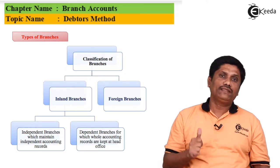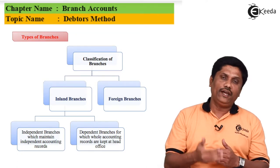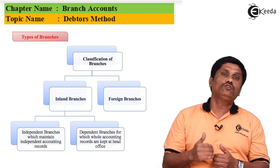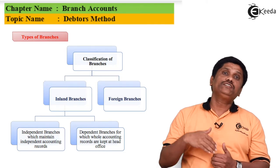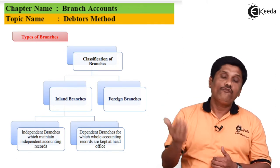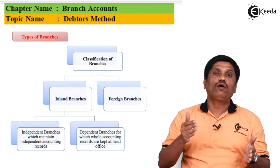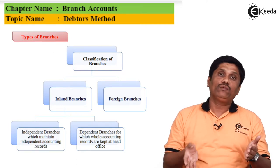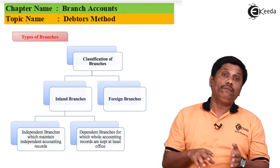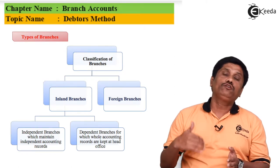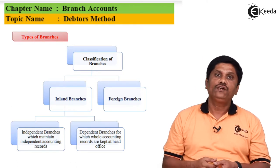There are two types of branches. First is the inland branch, which is the domestic branch — where both the head office and the branch are located in the same country. A foreign branch is where the head office is in one country and the branch is in another country. An inland branch is further of two types: one is the dependent branch and the other is the independent branch. A dependent branch is very small and depends on the head office for its accounting. An independent branch is comparatively bigger and does its own accounting.